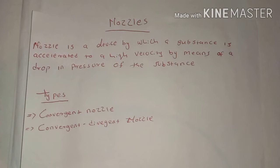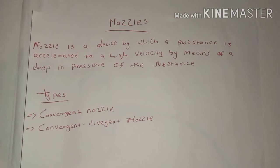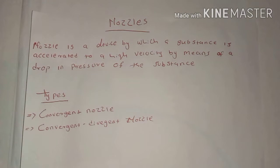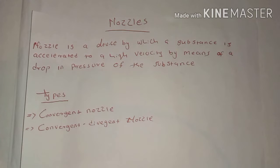A nozzle is a device by which a substance is accelerated to a high velocity by means of a drop in pressure. By this statement, we can tell that in simple terms, a nozzle is a device which we use to convert from pressure energy into kinetic energy, because we know energy is conserved. So a nozzle is a device that we use to convert from pressure energy to high velocity, or to kinetic energy.